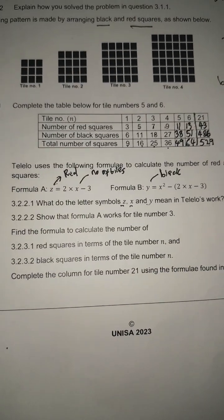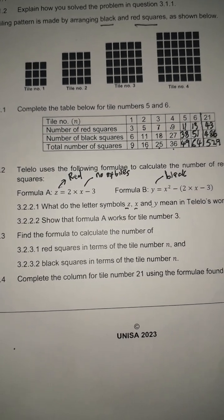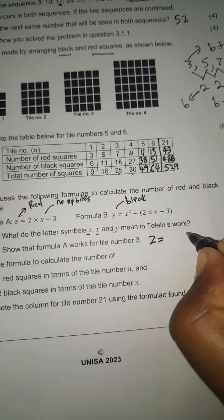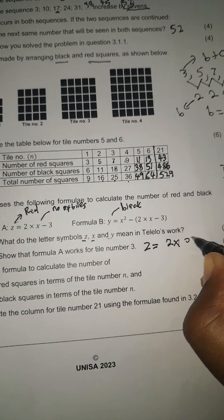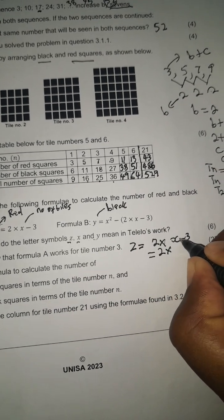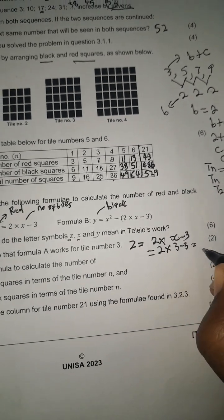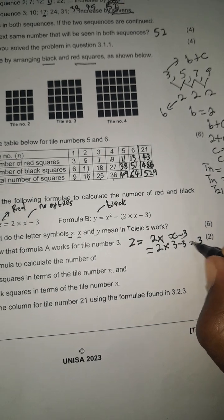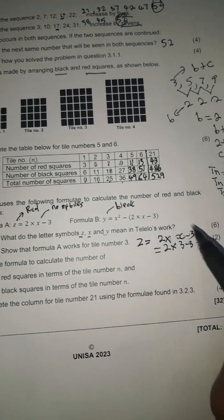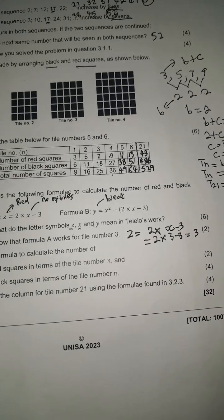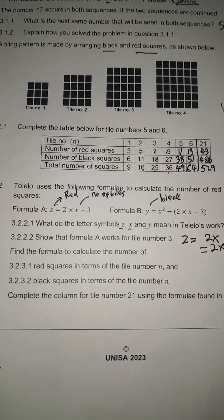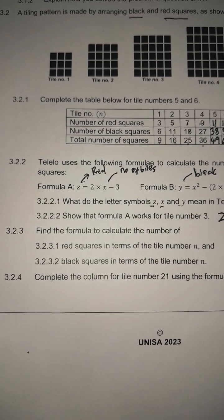For question 3.2.2.2, we show that Formula A works for tile number 3: substituting x = 3 gives 2 × 3 − 3 = 6 − 3 = 3. This matches the red square count for tile 3, so the formula is verified.